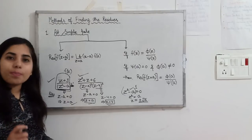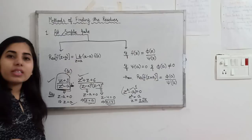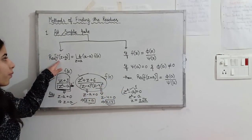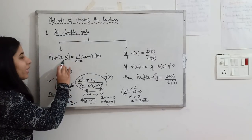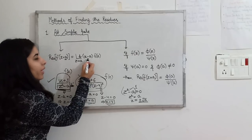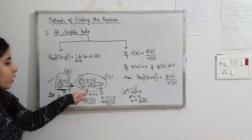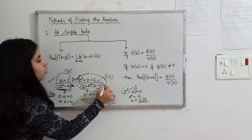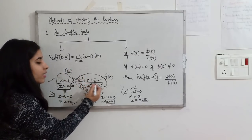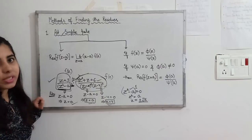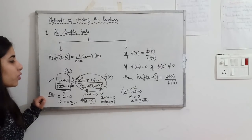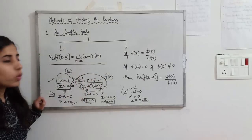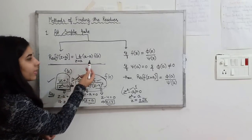Now let's see the methods to find the residue at a simple pole. The first method: the residue of function f(z) at z = a is equal to the limit as z tends to a of (z − a)·f(z). Here, (z − a) cancels with the denominator, and after simplifying, you substitute z = a everywhere z appears to get the residue.